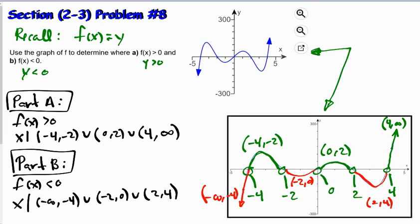So we have expressed the intervals for the x values that make f(x) greater than 0 in part a, and that make f(x) less than 0 in part b.